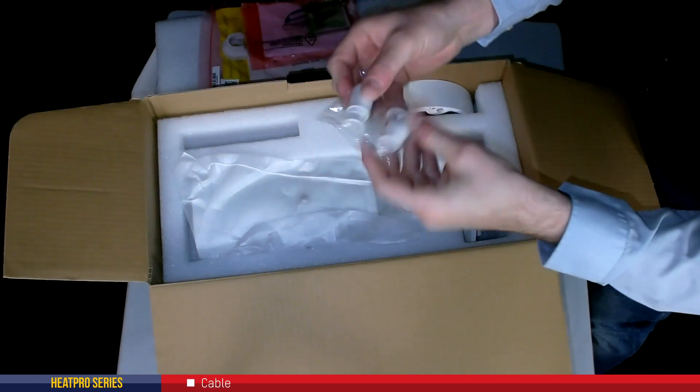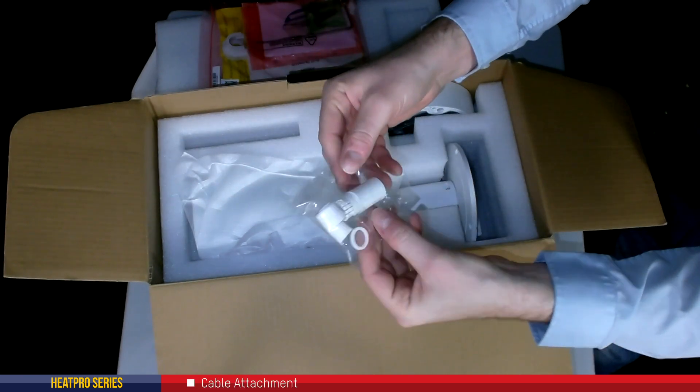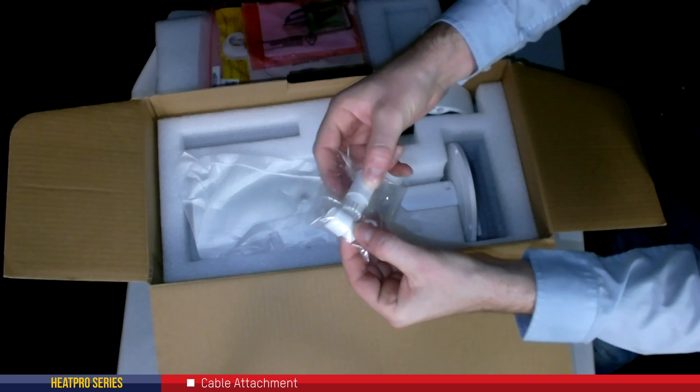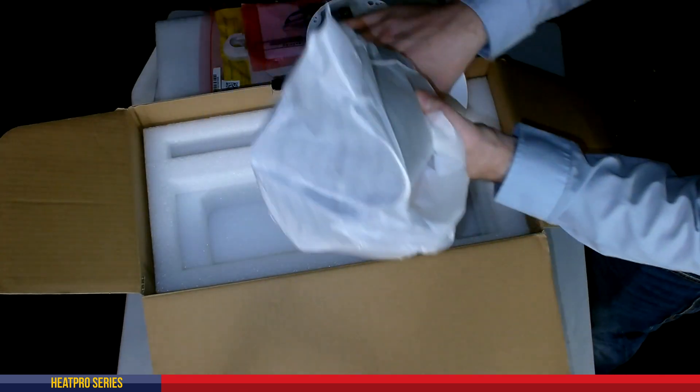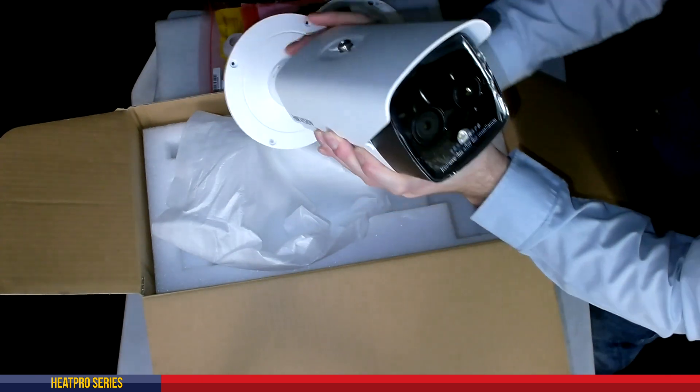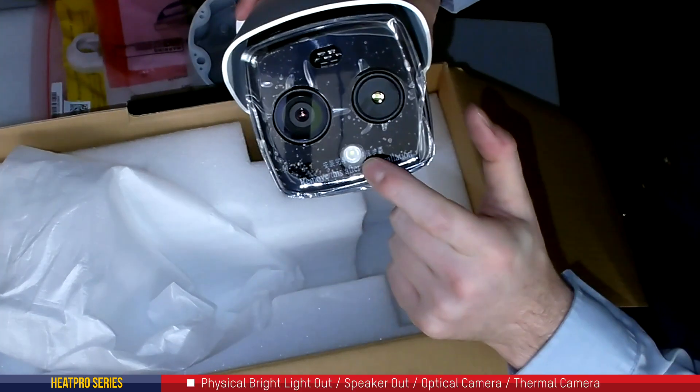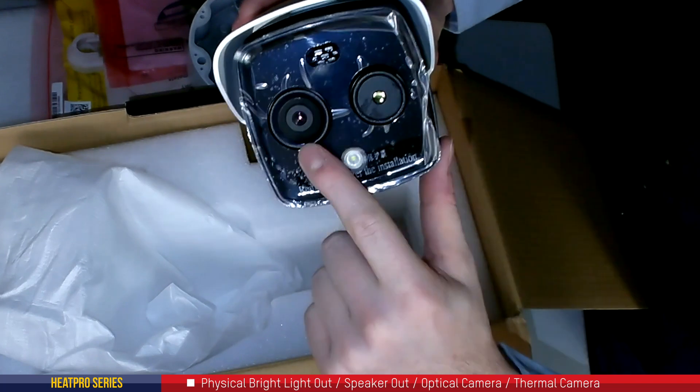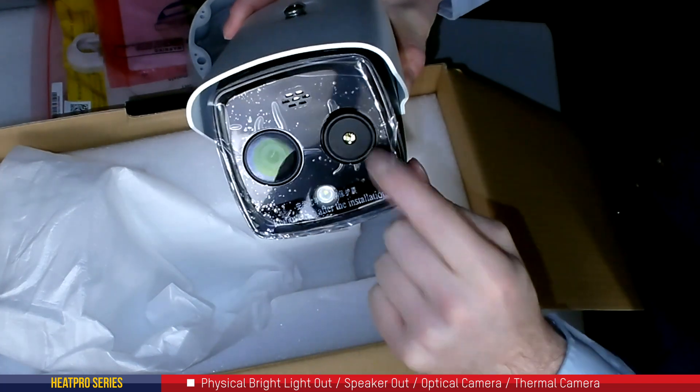We also have our cable attachment as well to give it that waterproof attachment down your Cat5 or Cat6 cable. And if we take a look at the front of the camera now, this is the front of the actual camera itself there. So as you can see we've got the physical white light out, we've got the speaker out, we've got the optical camera and then here we've got the thermal camera.